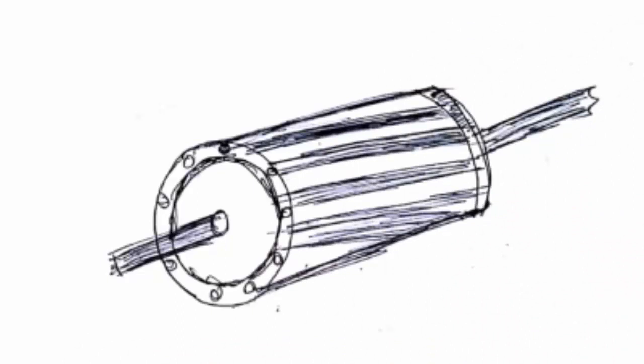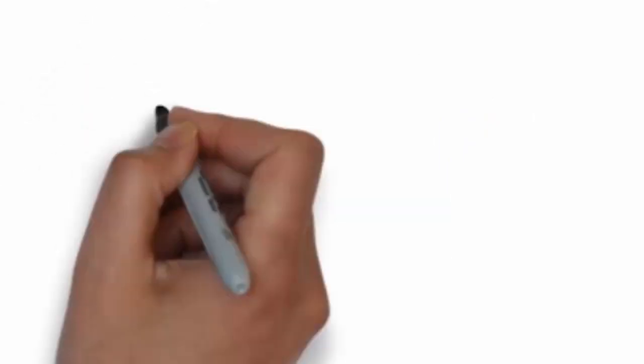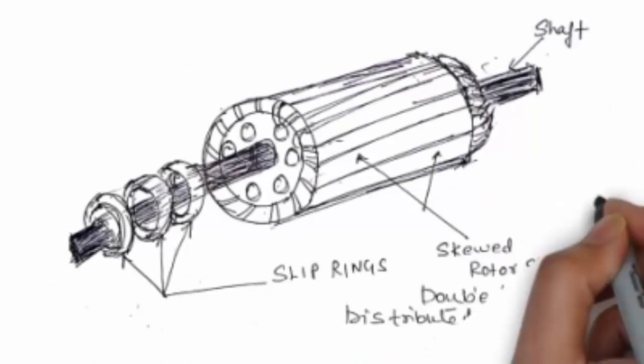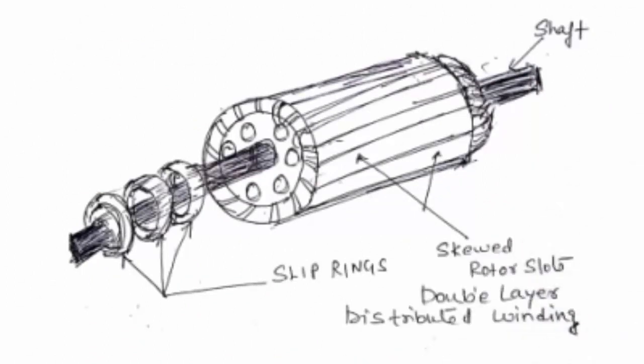It is seen that the induction motor rotor bars — whether slip ring or squirrel cage — are skewed. They are not straight but skewed, because if there were straight bars they would lock themselves with the stator field and cause the motor not to rotate or get stuck. To prevent magnetic locking, the windings are skewed.